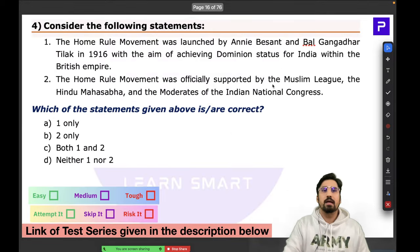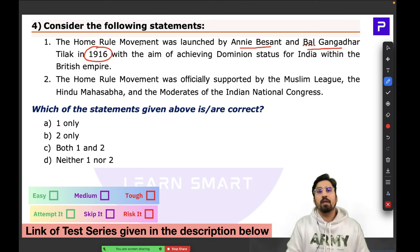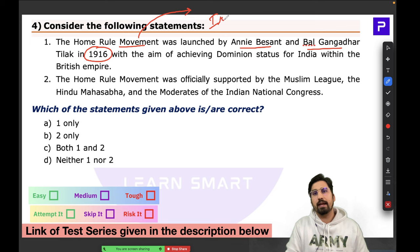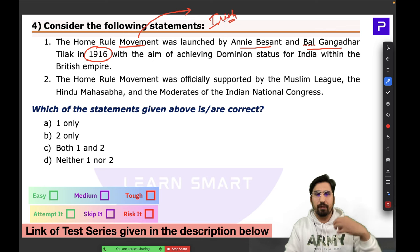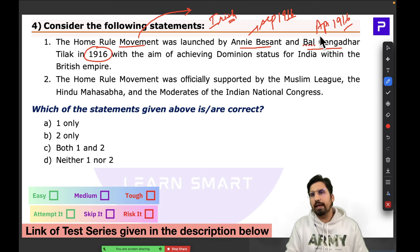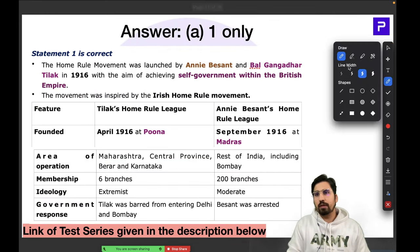Question Number 4 was about the Home Rule Movement, launched by Annie Besant and Bal Gangadhar Tilak in 1916. It is one of the most important movements in modern history. The inspiration came from the Irish Home Rule Movement. Tilak started his movement in April 1916; Besant started in September 1916.